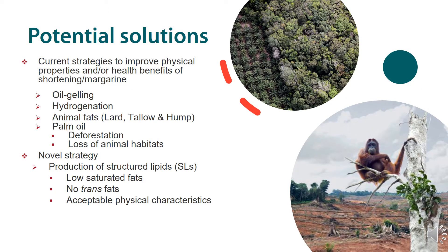Here are some potential solutions to improve the physical properties of baking fats, their health benefits, or both. But each of them also has some problems. For example, palm oil has issues with deforestation and loss of animal habitat — everyone is aware of the plight of the orangutan in Borneo. Here, I am trying to produce structural lipids in a sustainable manner. This novel strategy provides structural lipids which don't have trans fatty acids and have low amounts of saturated fats, but provide acceptable physical properties in food products, such as shortenings.